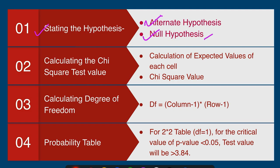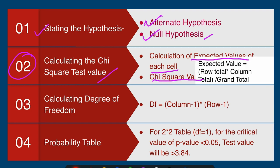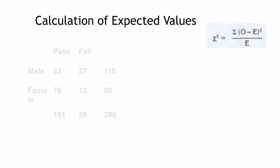The second step is the lengthiest and most difficult step: calculating the chi-square test value. We need to calculate the expected value of each cell and then the chi-square value. The expected value of each cell is calculated by multiplying row total by column total, divided by grand total. That is the formula for getting the expected value.